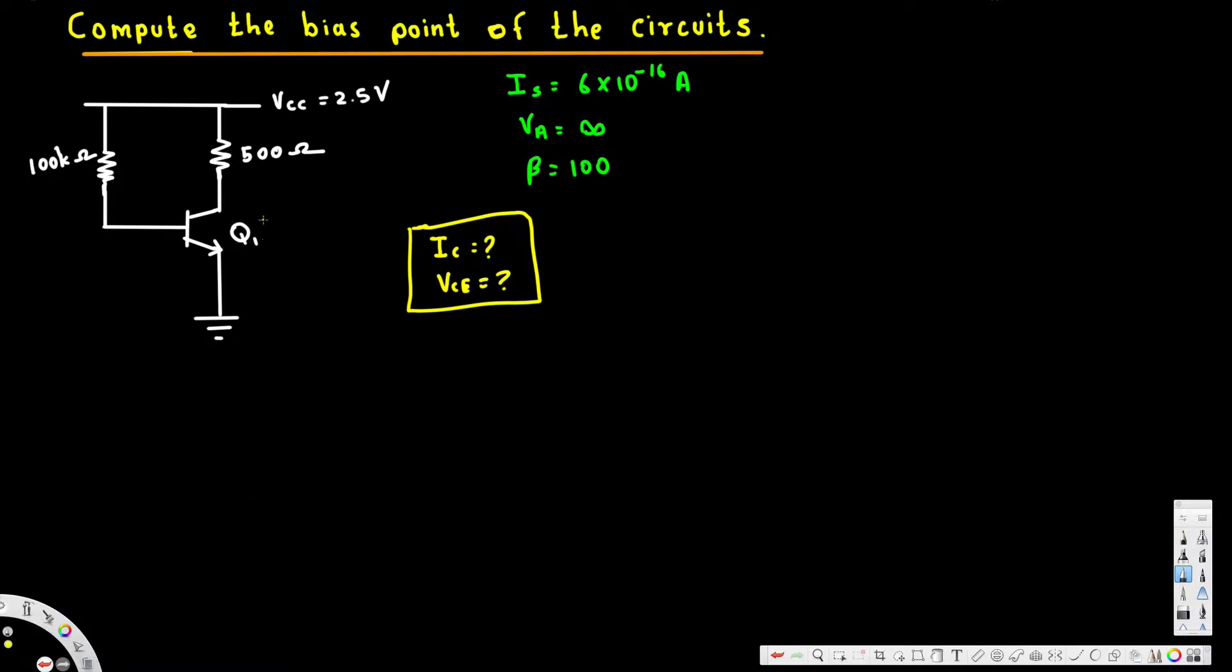In this video let's see how we can solve this problem here. The question is asking compute the bias point of the circuit. The bias point is basically Vce, that's what we are going to calculate.